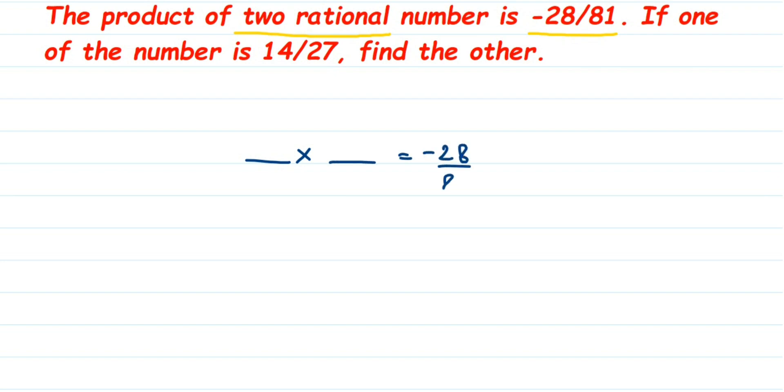And here they have given one number which is 14 by 27. Suppose the first number is 14 by 27, the second number we do not know and that is what we have to find out here. Now since this number is unknown to us, let us assume that the number is x.